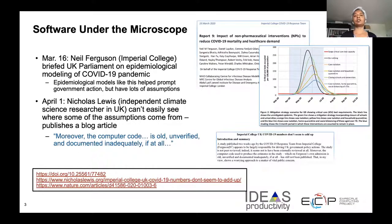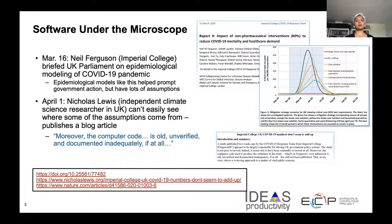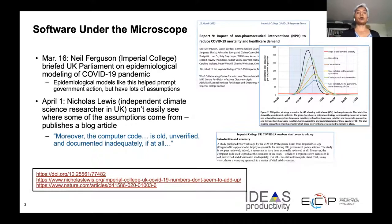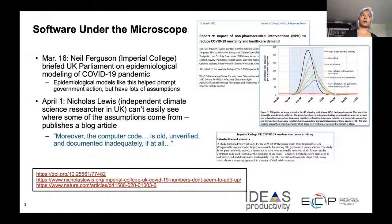It came to attention because very soon after this model was used to brief the UK Parliament, an independent climate science researcher wrote a blog article stating that he couldn't see where some of the assumptions came from. Moreover, he went on to assert that the code is old, unverified, and documented inadequately, if at all. That created a storm of back and forth among communities of commercial software development and the scientific establishment.